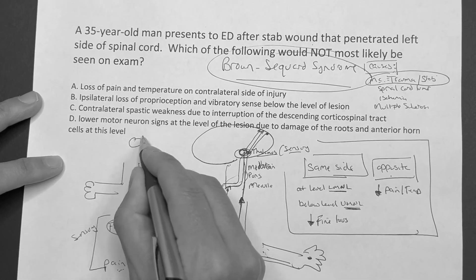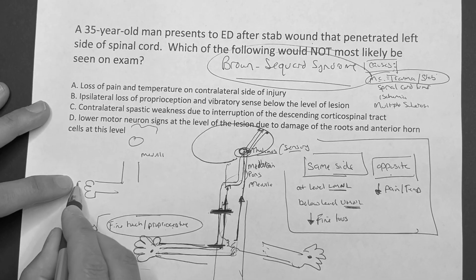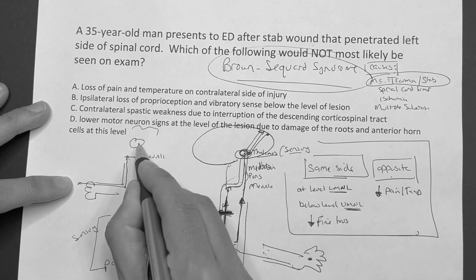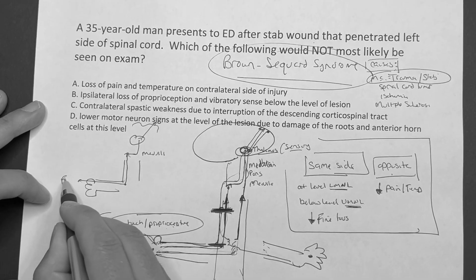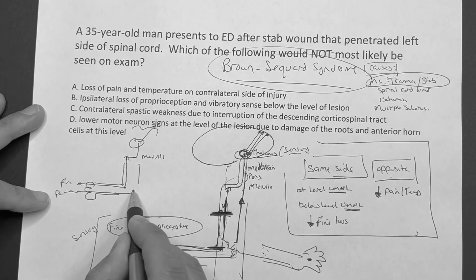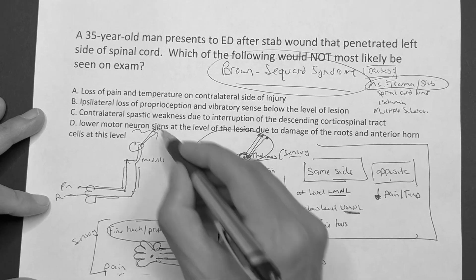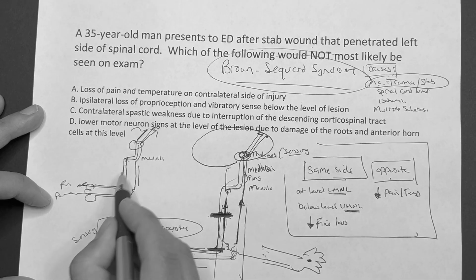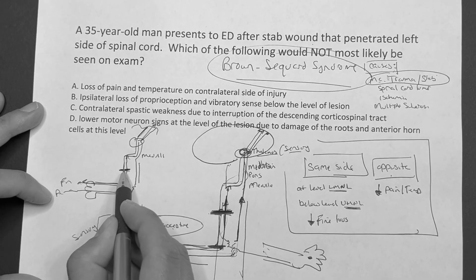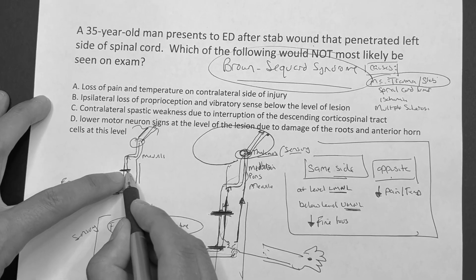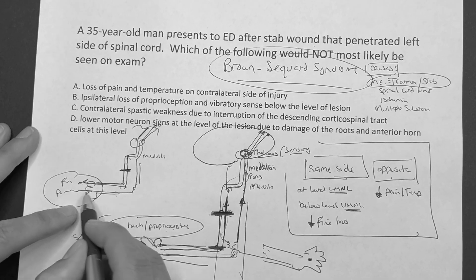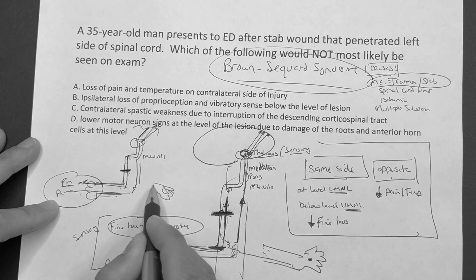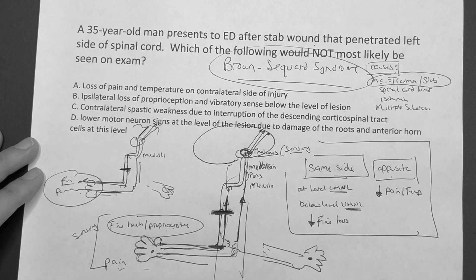To recap quickly: fine touch goes same side up to the medulla, crosses over, goes to the thalamus. Pain goes up, crosses over at the spinal cord, thalamus, brain. Motor comes back down, crosses at the medulla, follows the fine touch pathway. So with an injury on one side: at that level, lower motor neuron lesion; below it, upper motor neuron lesion; same side, decreased fine touch; pain is fine on the same side; opposite side, issue with pain and temperature. Keep playing that over in your head.